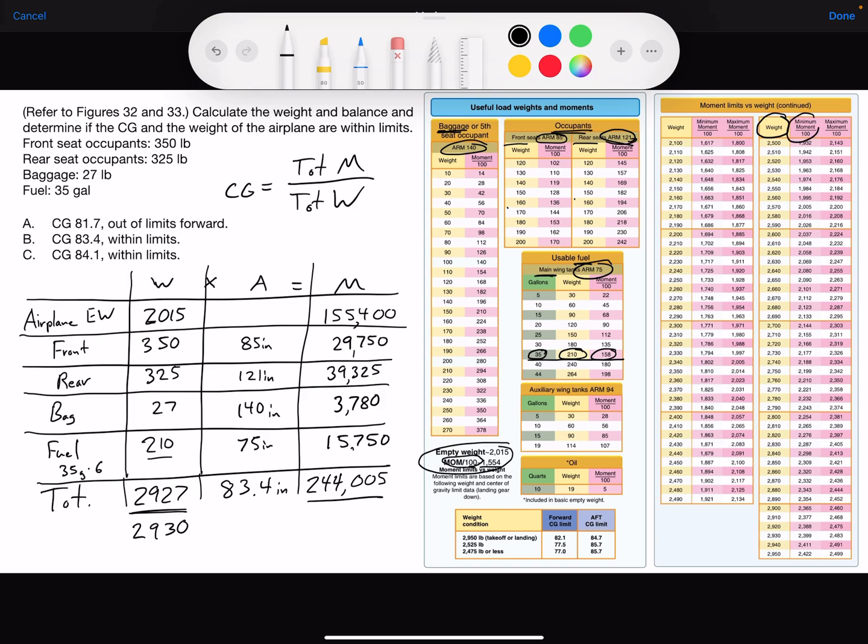And I have a minimum moment and a max. So the minimum is your forward center of gravity limit. The max is your aft center of gravity limit. And so 2,930 would be right here.